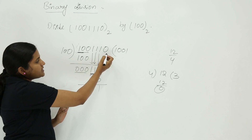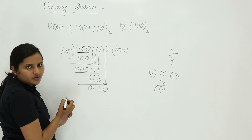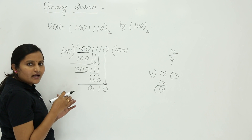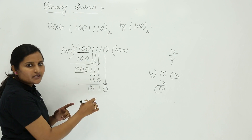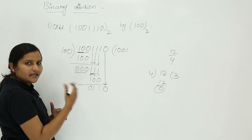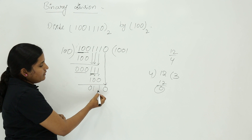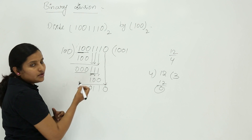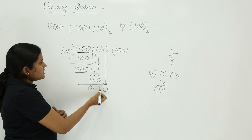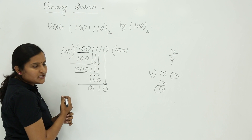Is there any other bit to bring down? Yes, zero is left — bring it down. In any step you can only take one bit; if you take an extra bit you need to put zero in the quotient. Now you have one one zero, whose value is six. Six is greater than four, so we can perform division.